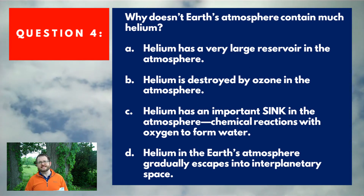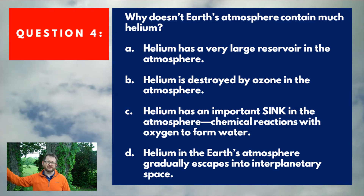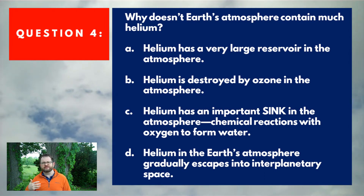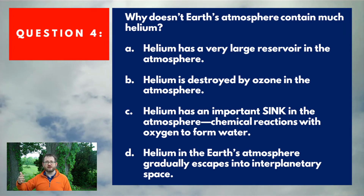The right answer here was D. D is saying that the helium in the Earth's atmosphere gradually escapes off into interplanetary space. Individual helium molecules are very light and move very fast, so it's very easy for them to escape Earth's gravity and head off into interplanetary space.